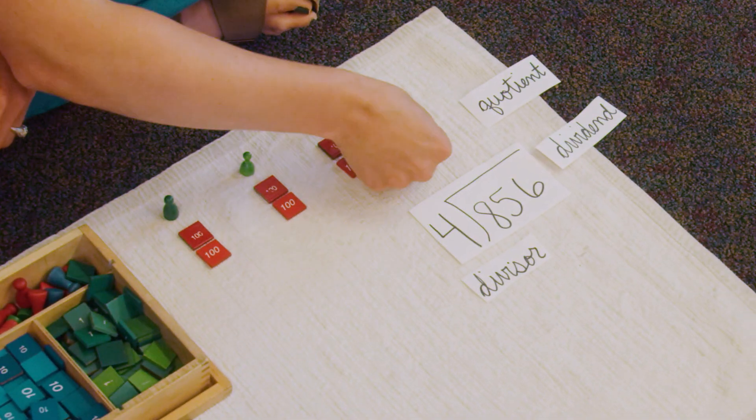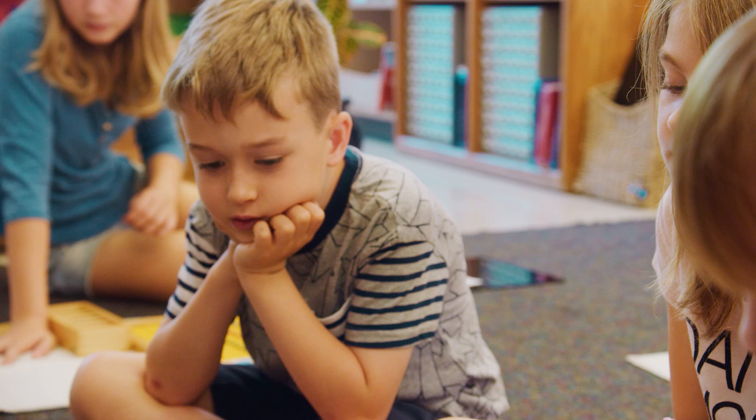Now each skittle has 200, so I'm going to move to my tens place. It's much simpler for them to grasp that concept. They're understanding why it's dividing equally or not equally.